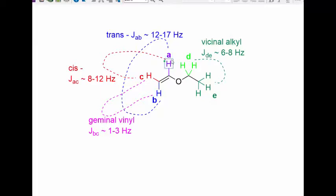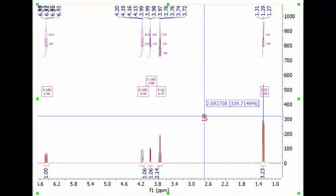In terms of actual J values that you'd expect, you would expect proton A to have a trans relationship with proton B, which means that you would expect to see a 12 to 17 hertz coupling showing up in each peak. Meanwhile, A and C, you expect to have a cis relationship, so you'd expect to see an 8 to 12 hertz coupling showing up in each peak. B and C are related to each other by a small geminal vinyl coupling on the order of 1, 2, or 3 hertz, somewhere in there. And then of course, you'd expect to see the normal boring vicinal alkyl coupling that shows up in both peaks D and E on the order of 7 hertz.